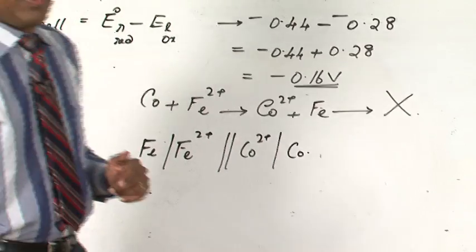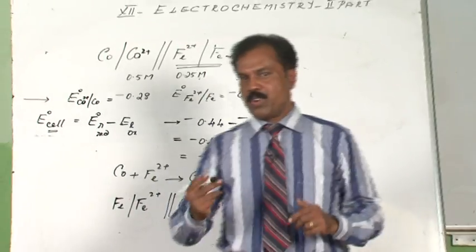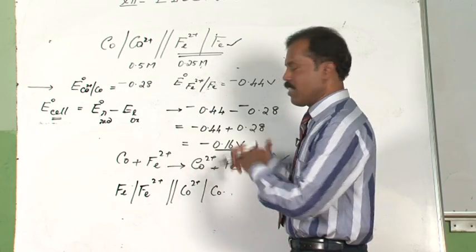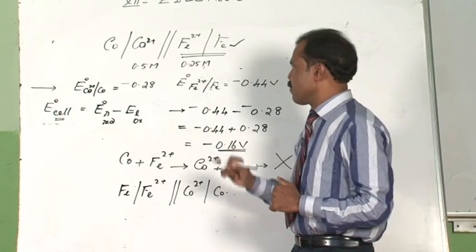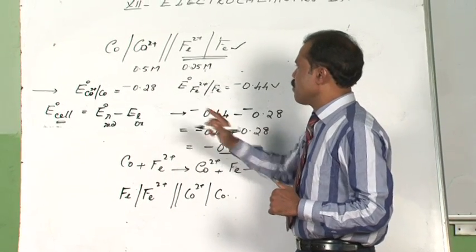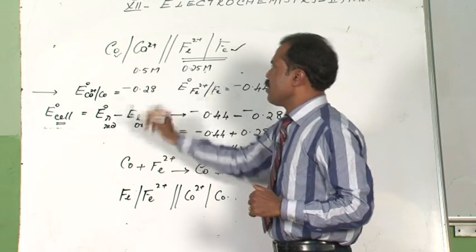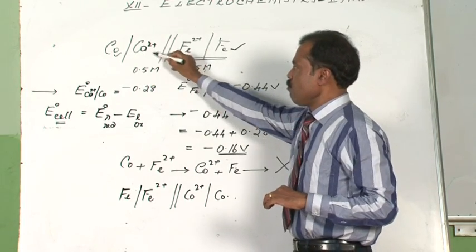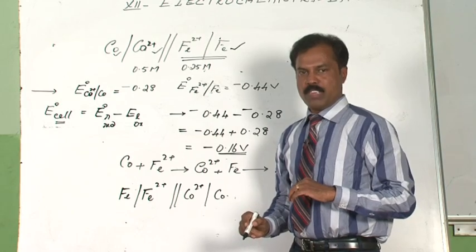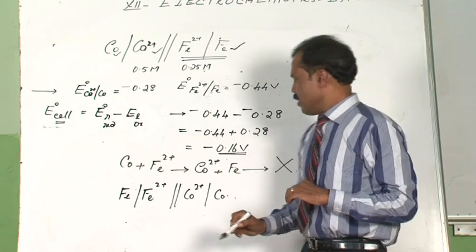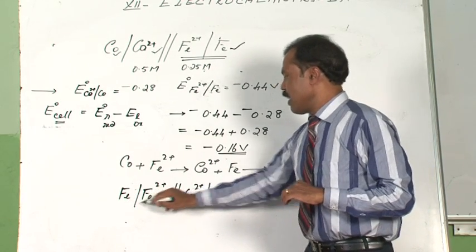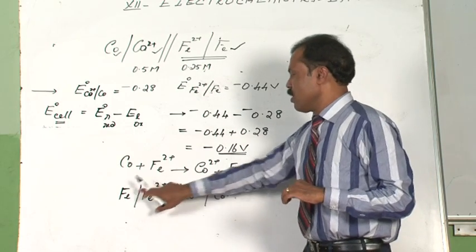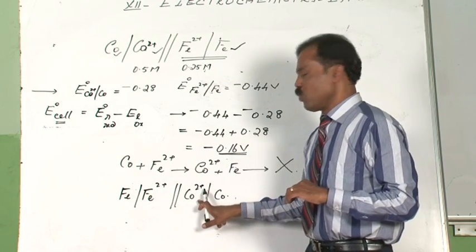But is there a difference between these two cells, or is it just written in the other way? There is a big difference. Here the cobalt metal is put in a solution of Co²⁺ ions, whereas in the correct setup, iron is acting as the oxidation half and iron is put in the solution of Fe²⁺ ions.